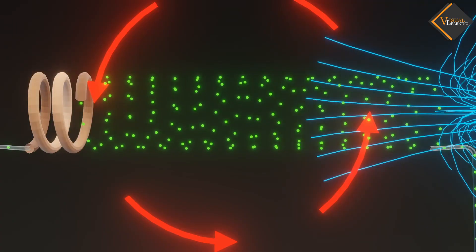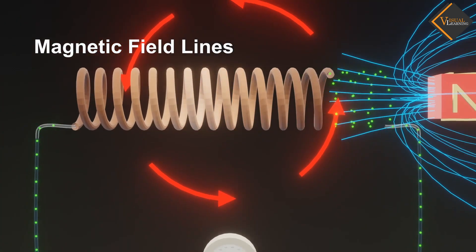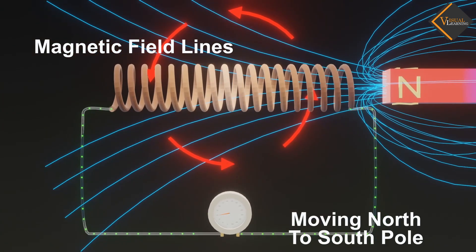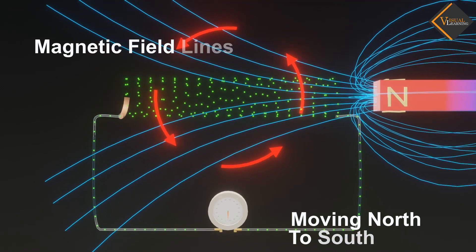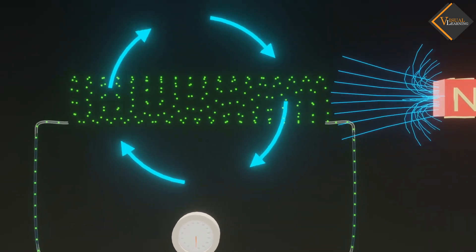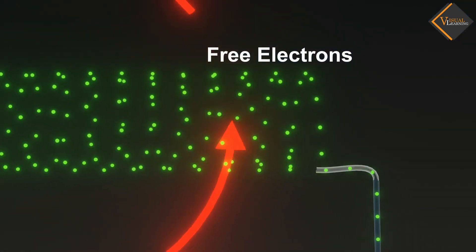This happens because the bar magnet produces magnetic field lines which form circular loops and move from the north pole to the south pole. When the bar magnet is in motion, the magnetic field influences the free electrons in the metal coil, causing them to move.